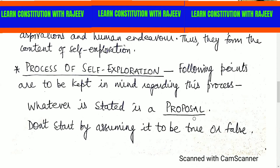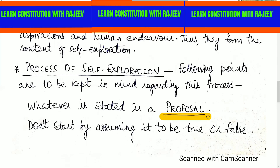There are two or three important things. If you understand them step by step, the process of self-exploration will be clear. The most important thing is: whatever is stated here is a proposal. In this subject of self-exploration, what will be told to you will be given in the form of a proposal. You can decide whether to accept or reject that proposal — there is no compulsion here.